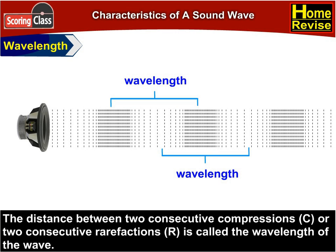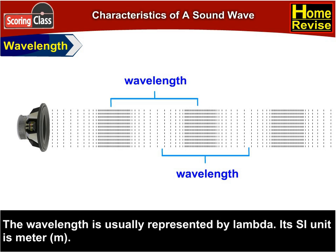The distance between two consecutive compressions (C) or two consecutive rarefactions (R) is called the wavelength of the wave. The wavelength is usually represented by lambda. Its SI unit is meter.